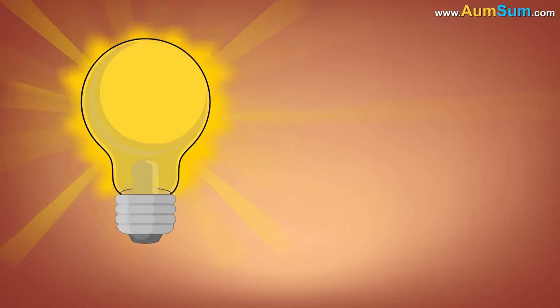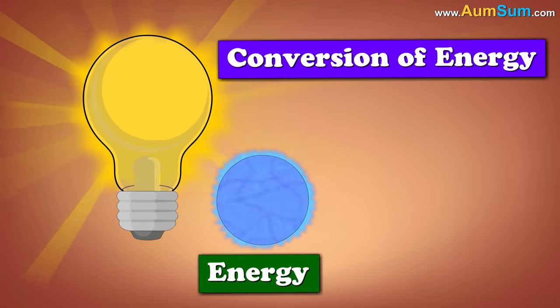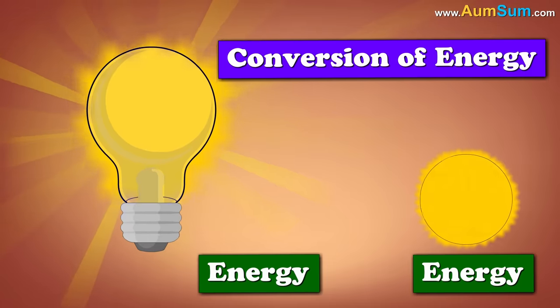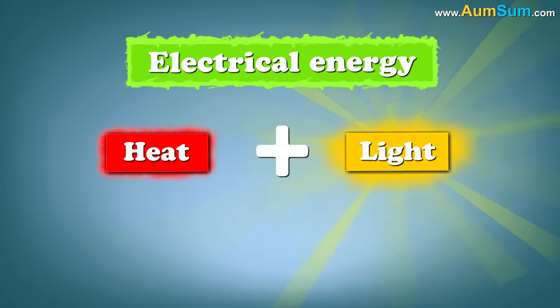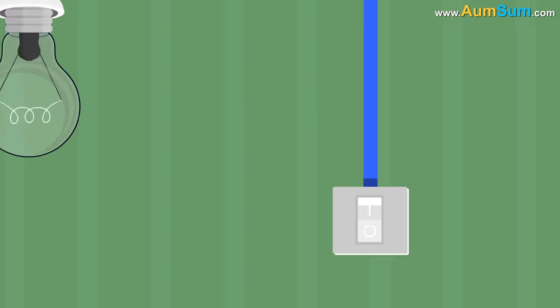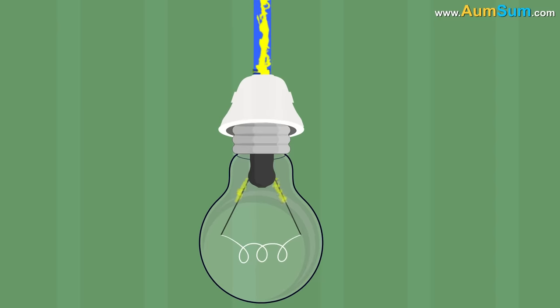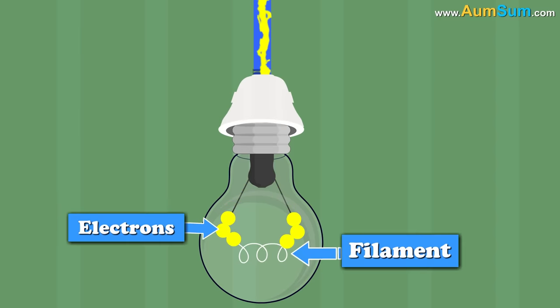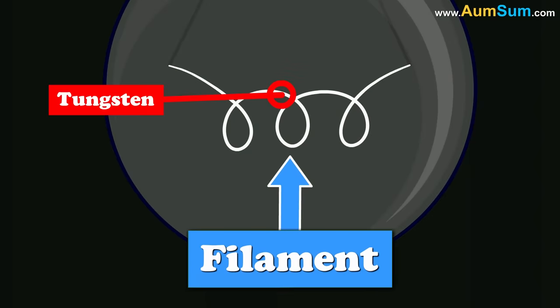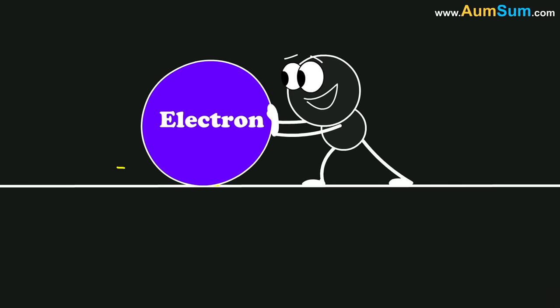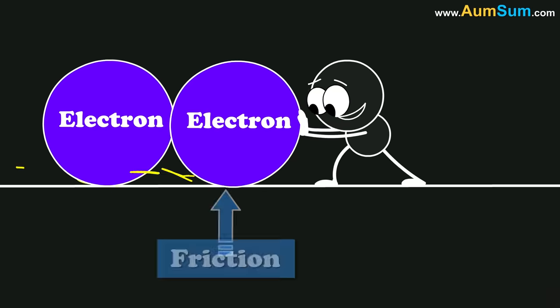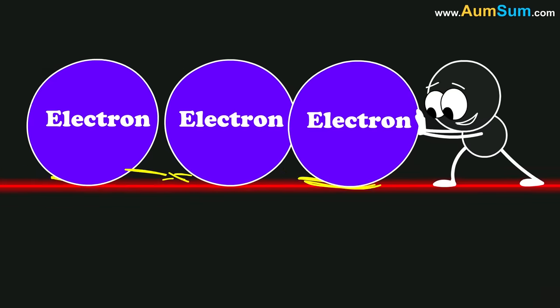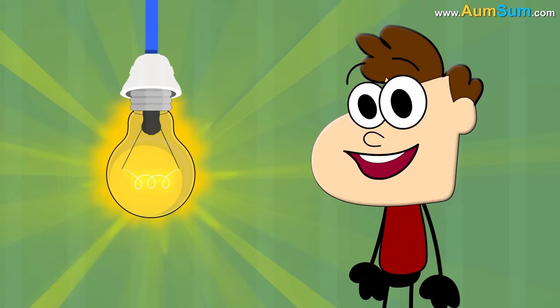A light bulb glows because of the principle of conversion of energy which states that energy is converted from one form to another. In this case, electrical energy is converted to heat plus light. When we switch on the bulb, electricity starts flowing. This electricity or the flow of electrons is hindered by the filament of the bulb. The filament is usually made of tungsten as it has a high melting point. A long and thin filament wire offers higher resistance to the flow of electrons. Now, this hindrance to the flow of electrons leads to the creation of friction which causes the filament to heat up and start glowing. This is how a light bulb glows.